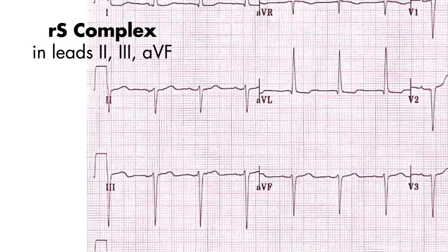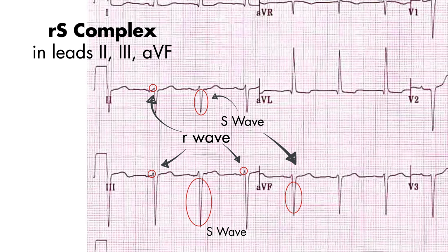In the inferior leads, you will find RS complexes, reflected on the EKG as small R waves and deep S waves in leads 2, 3, and AVF.